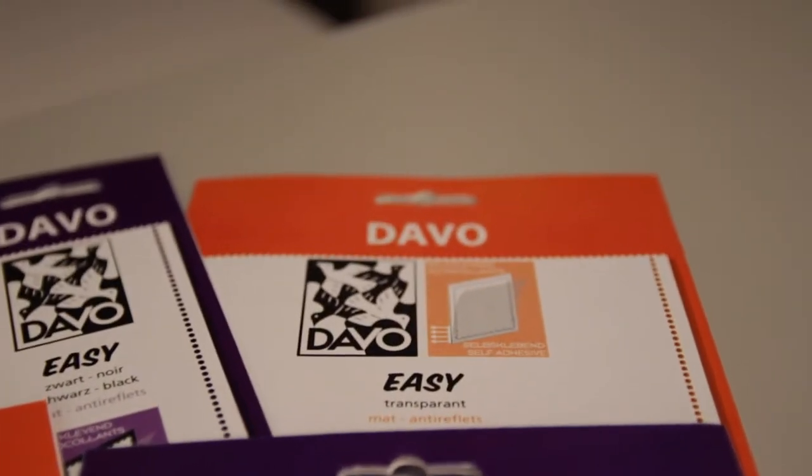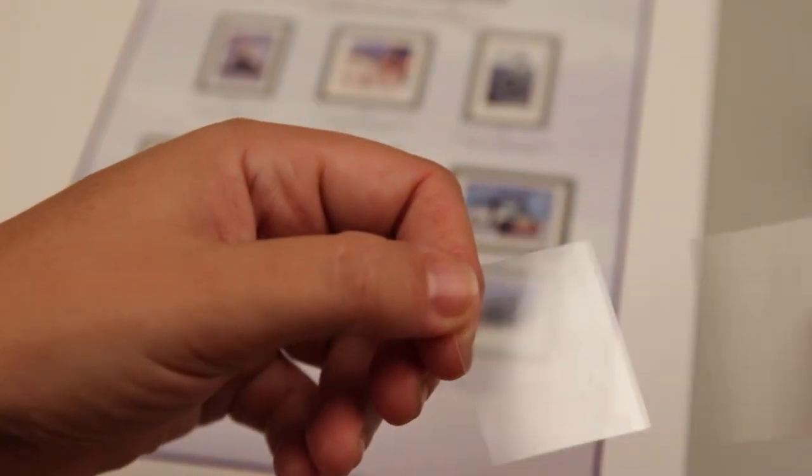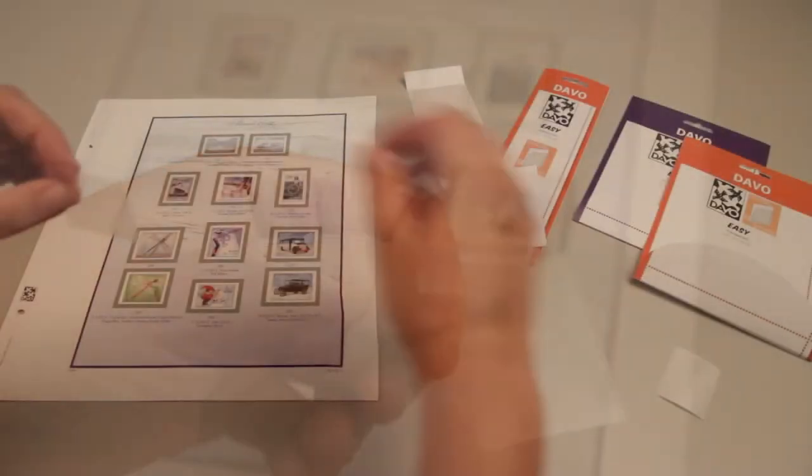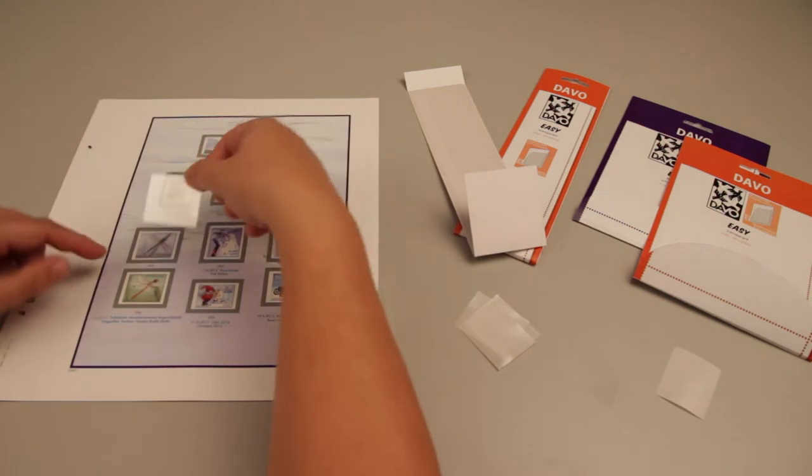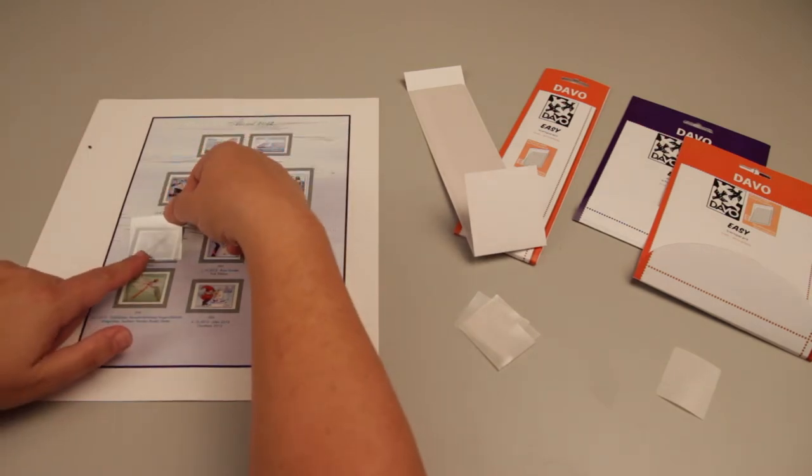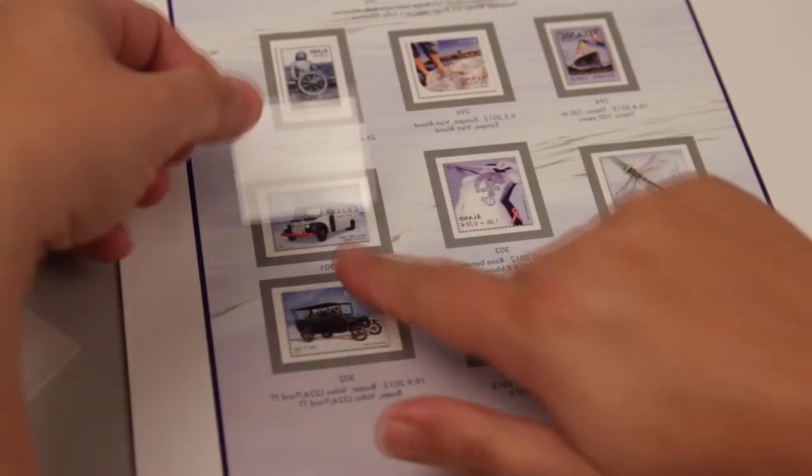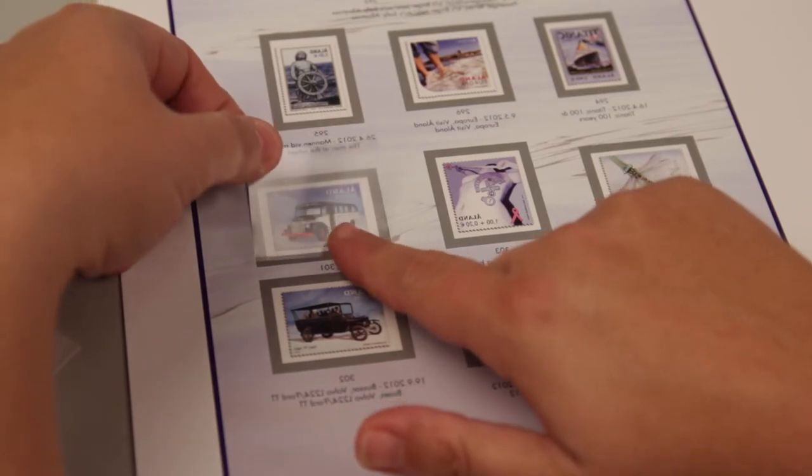So how do they work? Carefully remove the protective paper from the mount and place the mount exactly in the right or left hand lower corner of the frame, depending on whether you're right-handed or left-handed. Put your finger lightly on the bottom, making sure the mount is not sticking to the paper yet.